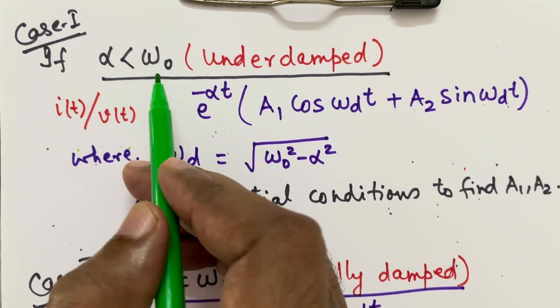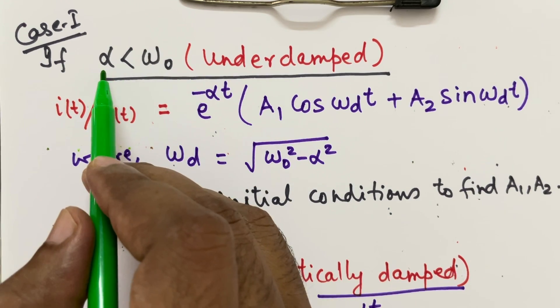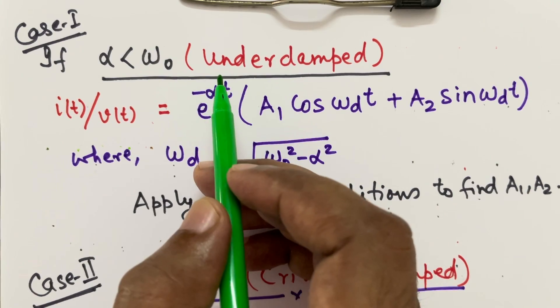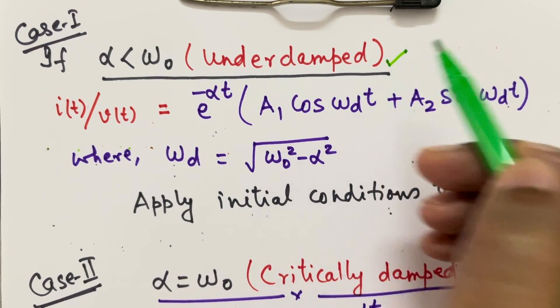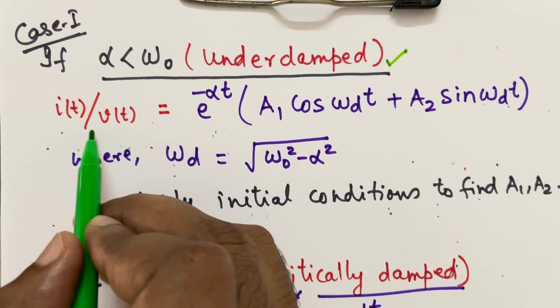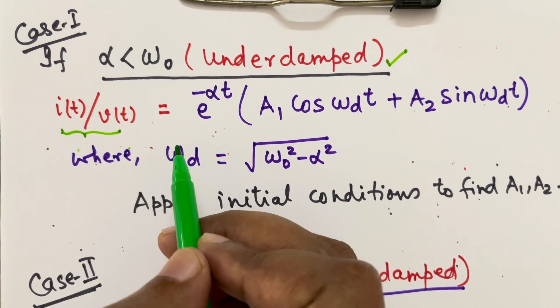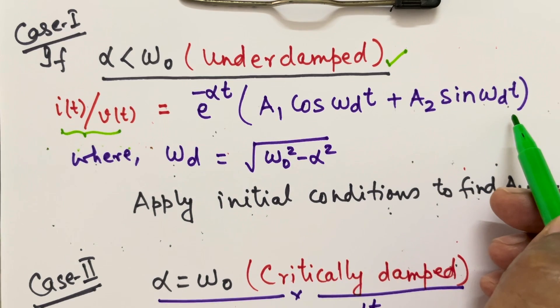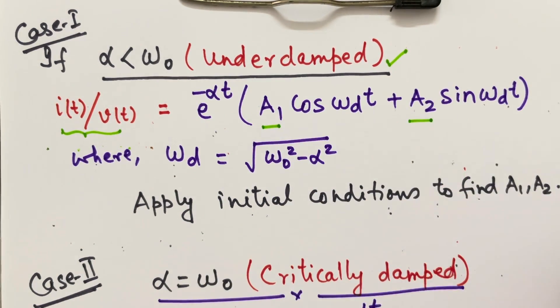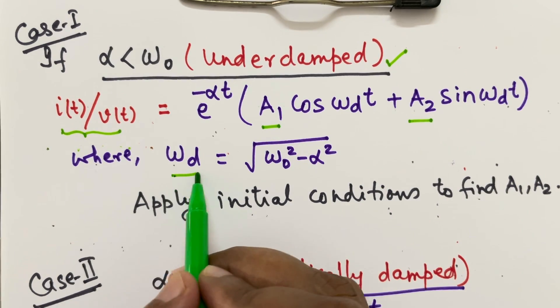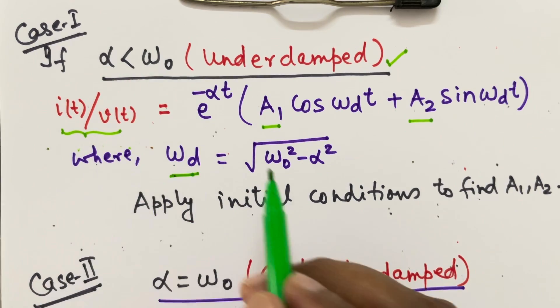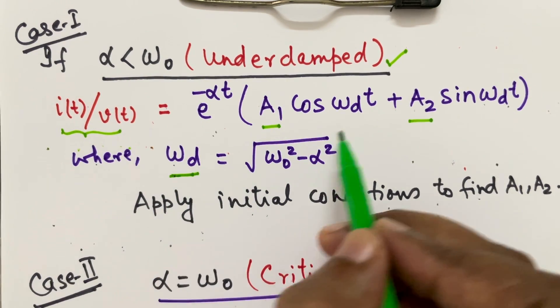If alpha is less than omega naught, we have found the alpha and omega naught value. If alpha is less than omega naught, then it is called under damped condition. And in under damped condition, the I(T) and V(T) either of this you can take is given as this expression. Where A1 and A2 constant is unknown and omega D is given by omega naught square minus alpha square. So already alpha and omega naught is known, so we can calculate omega D.